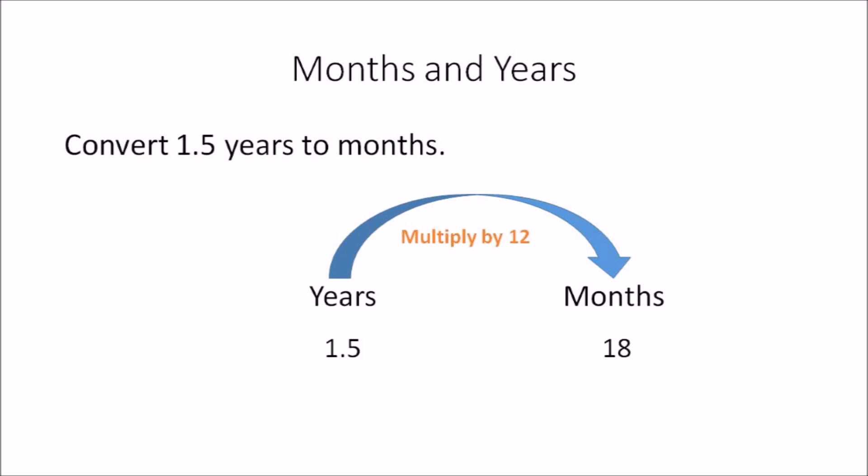In this example, convert 1.5 years to months. Again, the question is asking you to convert years to months, so all you need to do is multiply by 12. So 1.5 multiplied by 12 gives you 18, so the answer is 18 months.